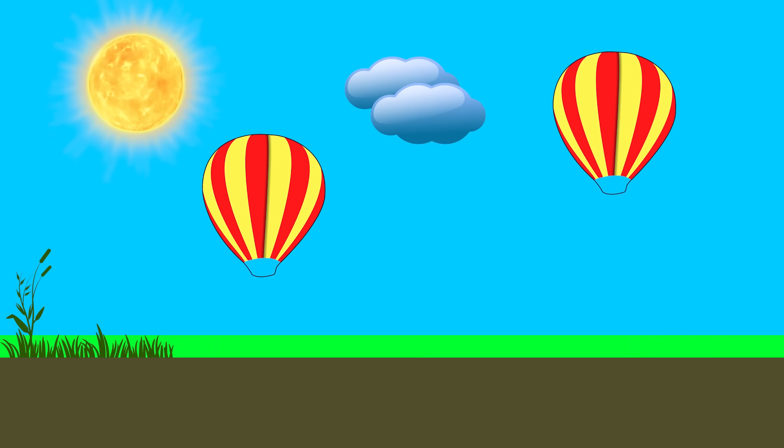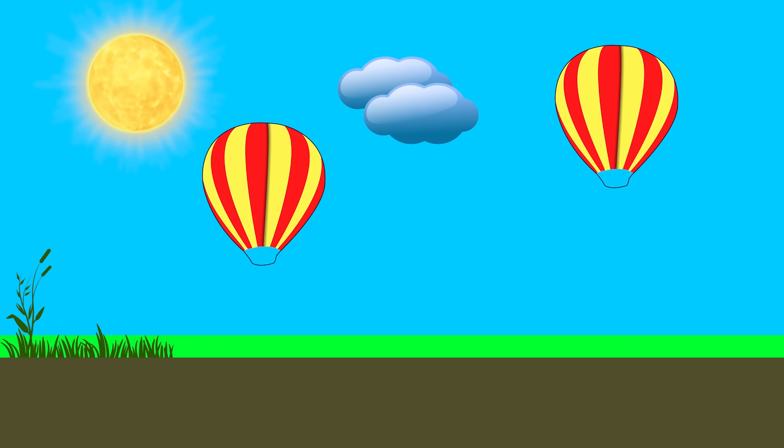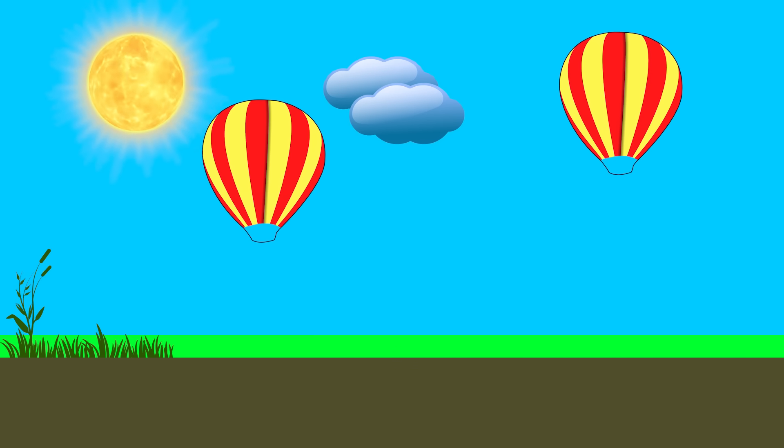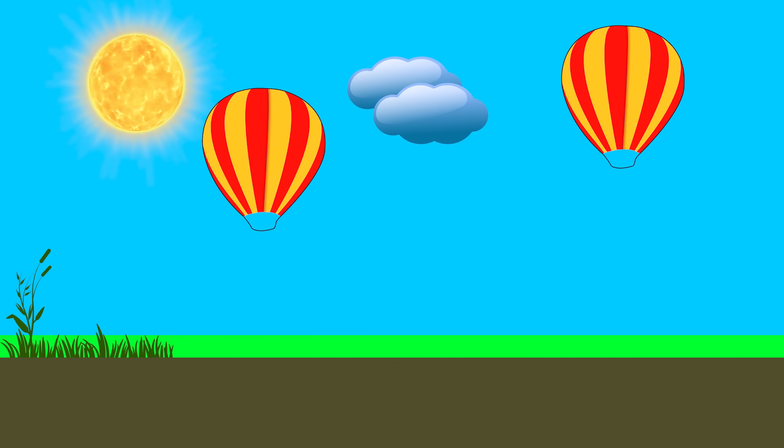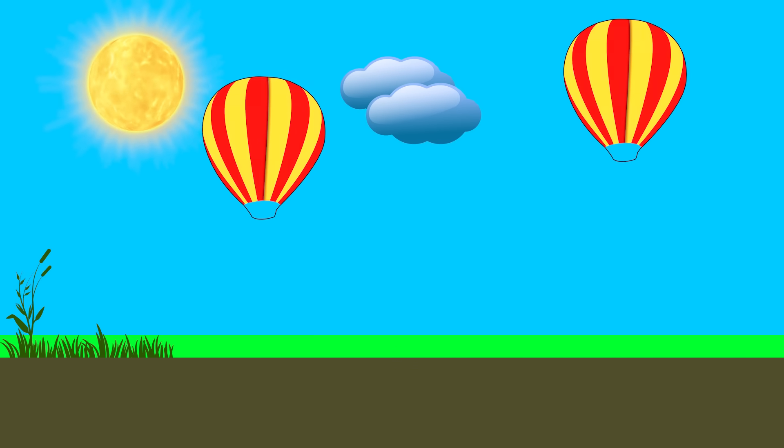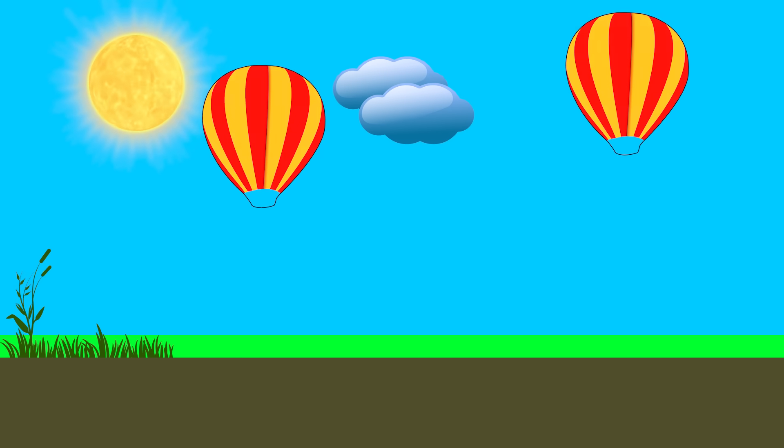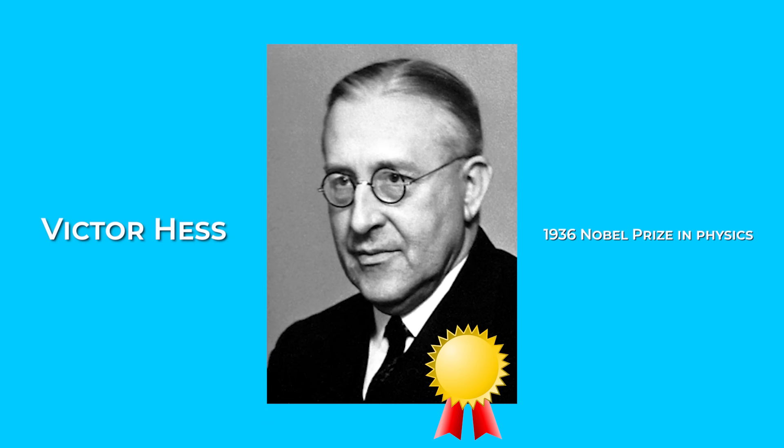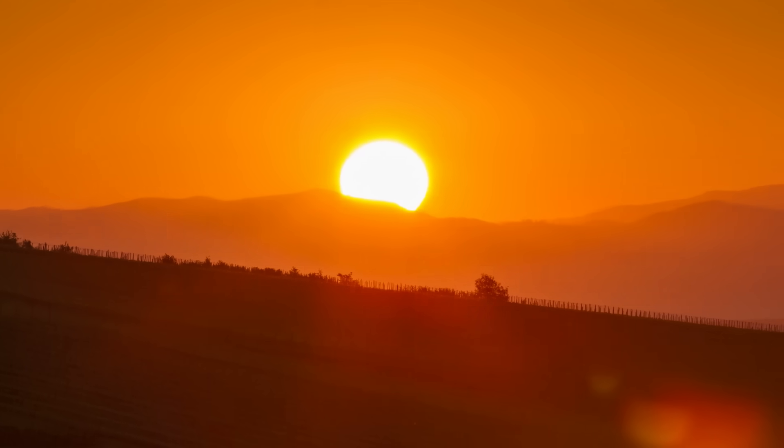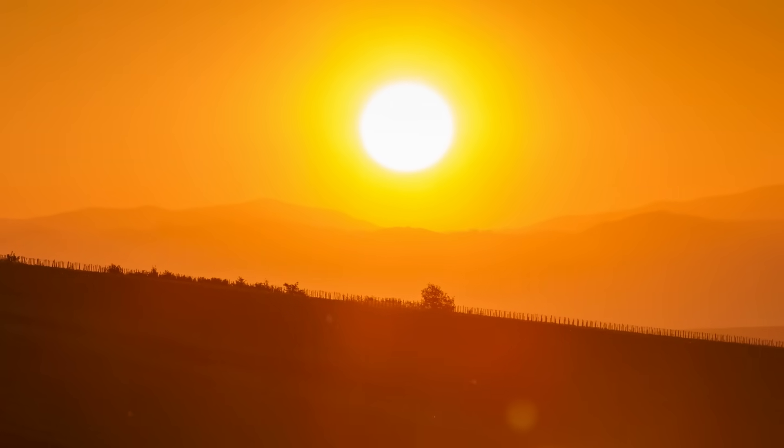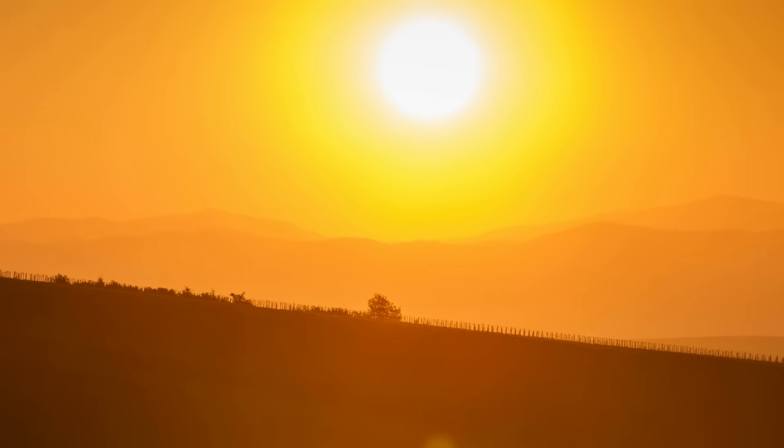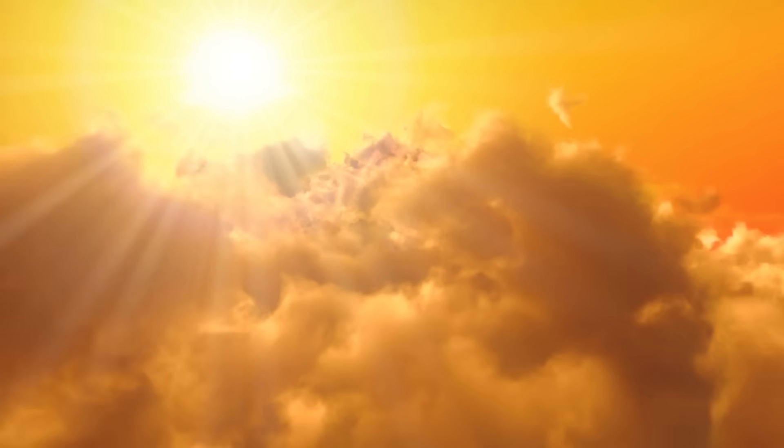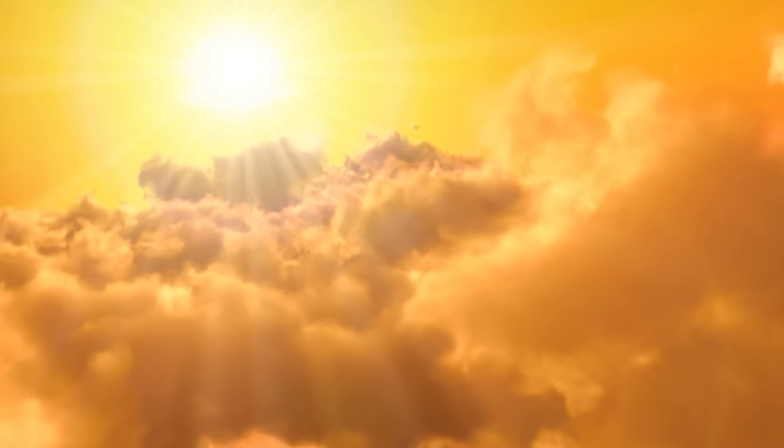In 1912, scientist Victor Hess took some balloons to be sent high in the atmosphere and recorded the amount of radiation received at different altitudes. He noticed the balloons were being hit by powerful radiation, and the higher he went, the stronger the cosmic rays. These experiments awarded him the 1936 Nobel Prize in Physics.